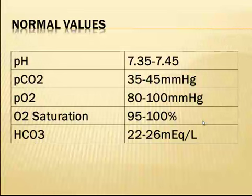Here are the normal ABG values. The normal blood pH is 7.35 to 7.45. The partial carbon dioxide is from 35 to 45 mmHg, with a partial oxygen of 80 to 100 mmHg. The normal oxygen saturation is from 95 to 100 percent, and bicarbonate is from 22 to 26 milliequivalents per liter.